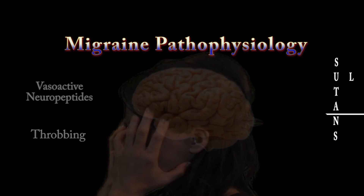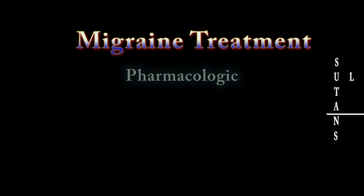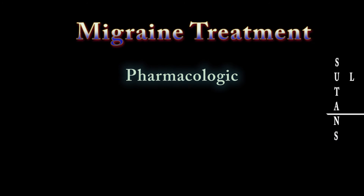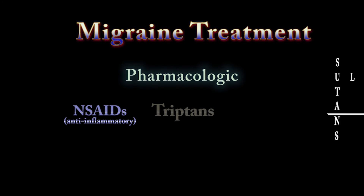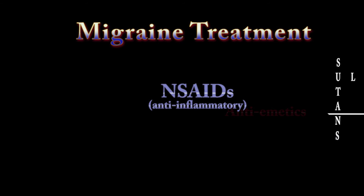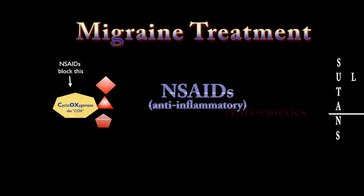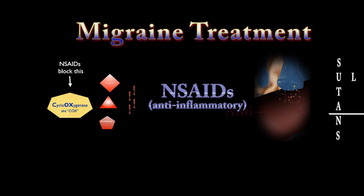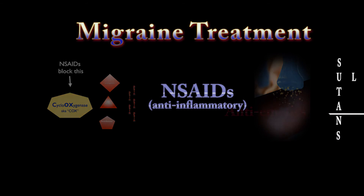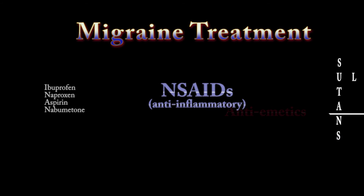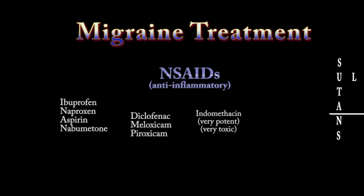Now that you understand what happens with a migraine, it'll make a lot more sense how we treat them. Pharmacologic treatment to abort a migraine is broken down into three main areas: anti-inflammatory medications, a newer class called the triptans, and medicines used to treat nausea and vomiting — the anti-emetics. Anti-inflammatories block inflammation by blocking the enzymes that cause it. Remember those vasoactive neuropeptides? Anti-inflammatory medicines combat this process, quelling the inflammation and treating the pain. There are many to choose from, broken into different classes — some work better depending on the situation and the patient.